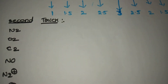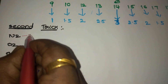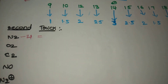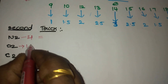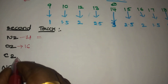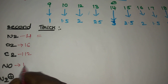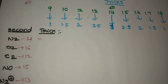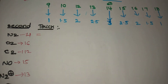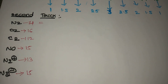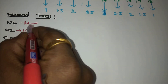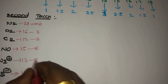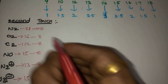For N2: 14 electrons — and we already know 14 electrons gives bond order 3. For C2: 12 electrons. For NO: 15 electrons. For N2+: 13 electrons. For N2−: 15 electrons. Step one is to count how many electrons there are; step two is to subtract from 8.